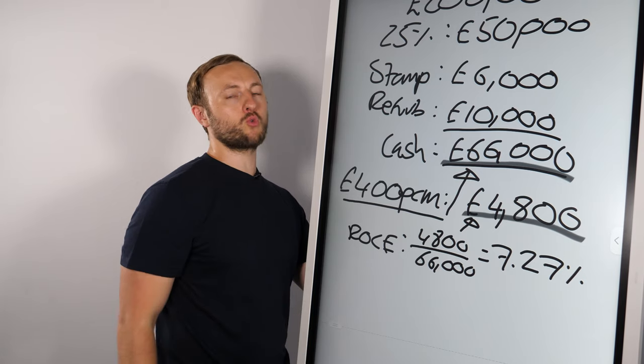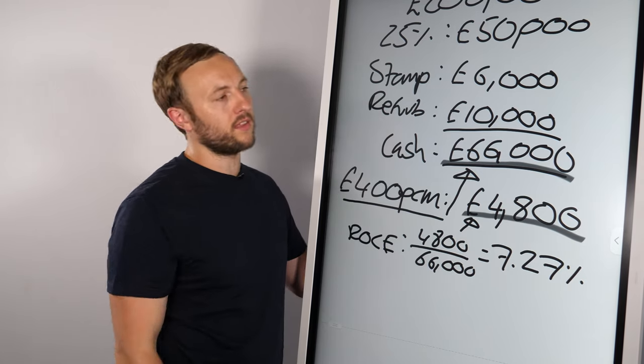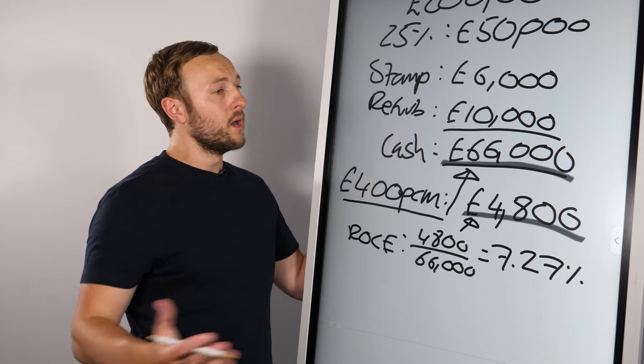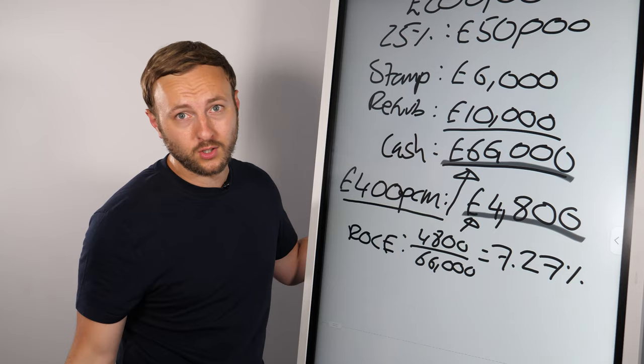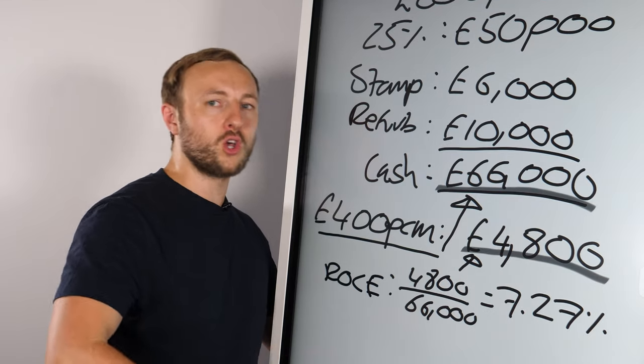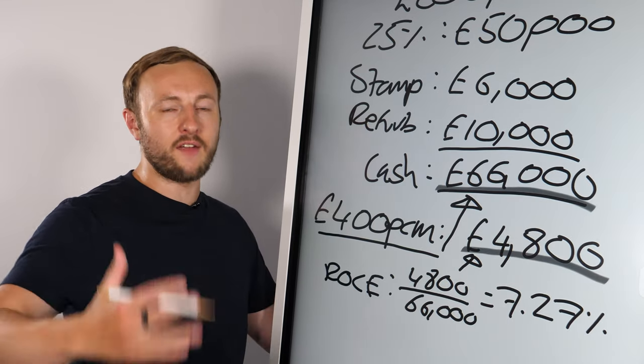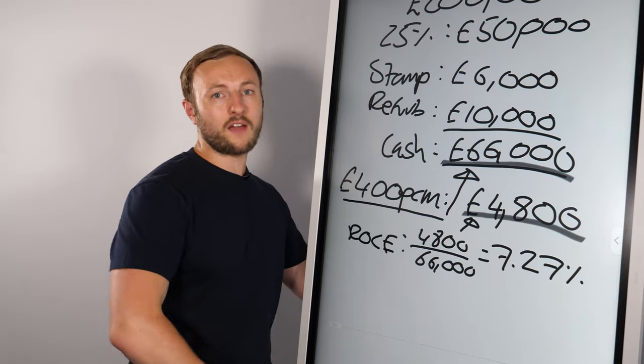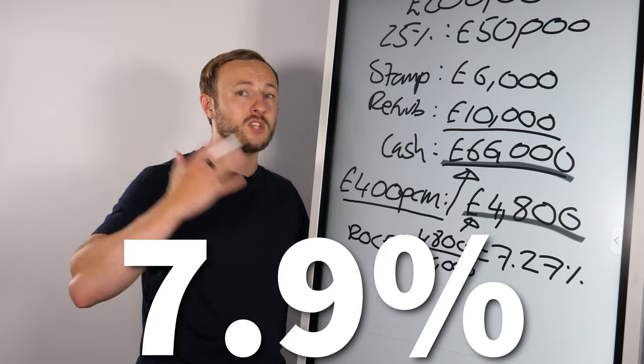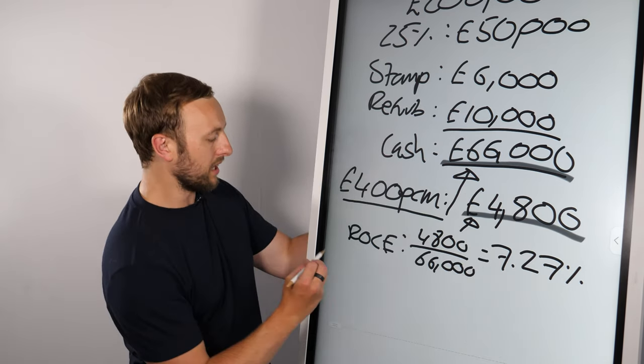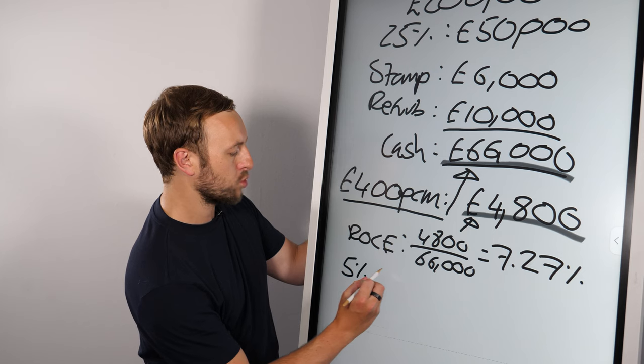Now, one thing with capital growth is you can't guarantee it. There are no guarantees in investment. And in the short term, property values can go up and down. You could actually lose money on property value. Over the long term, property typically doubles every 10 years or so. So on average, the one year capital growth is 7.9%. And that's been for almost a thousand years now.